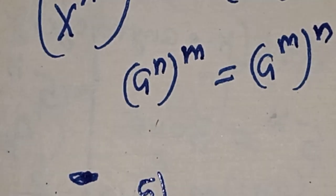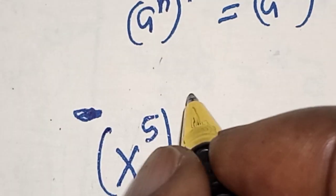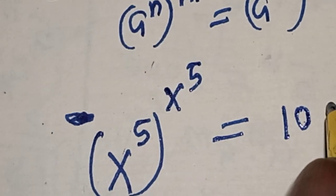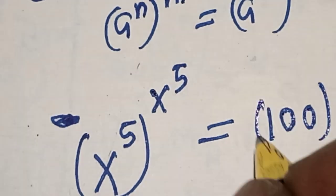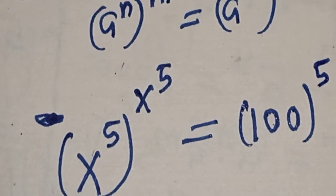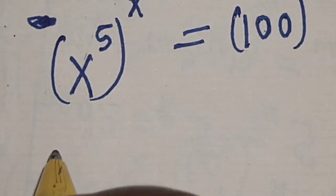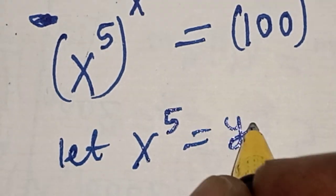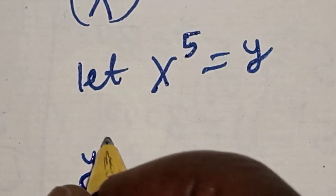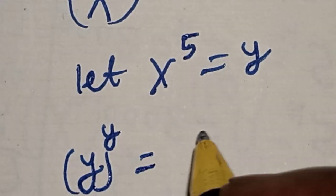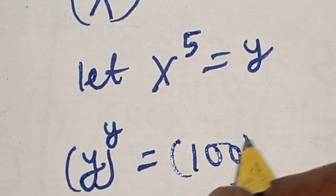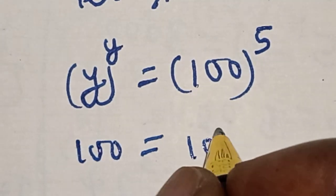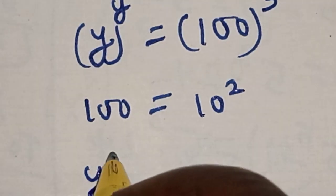Applying the rule, we get s raised to power 5, raised to power s raised to power 5, is equal to 100 raised to power 5. Now let's substitute: let s raised to power 5 equal y. This becomes y raised to power y is equal to 100 raised to power 5.